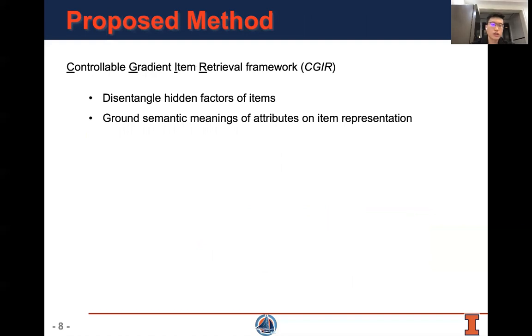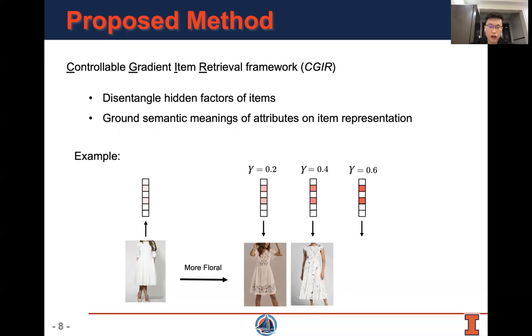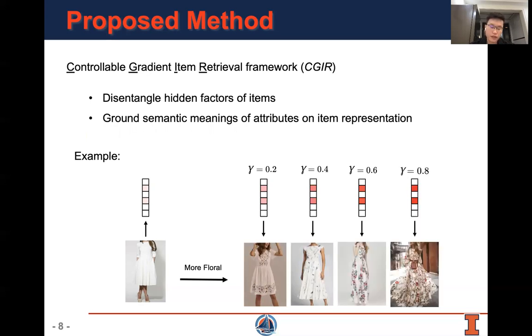In our work, we propose the controllable gradient item retrieval framework called CGR. It can disentangle hidden factors of items and ground semantic meanings of attributes on item representation. Here is an example. A reference item will first be mapped into hidden representation. And then, according to the modification, the relevant dimension about the attribute of floral will be located. Then, by increasing the modification strength gamma, the value on the relevant dimension will be changed gradually, and then the sequence of items will be retrieved accordingly.